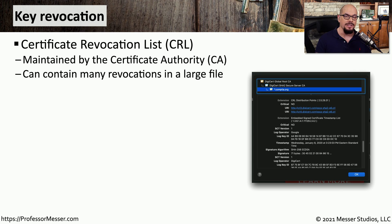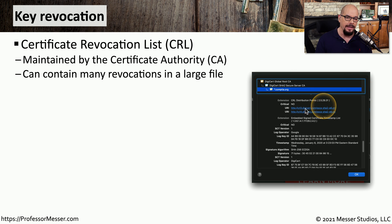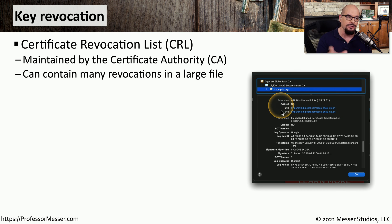There may be times when a site is compromised and the certificates on that site need to be revoked before they expire. We can provide this key revocation through a number of different means. One of these is a certificate revocation list, or CRL. This is a large list of revoked certificates that is stored at the certificate authority — usually a single large file stored on the CA. Looking at the certificate on the CompTIA website, the CRLs are listed as one of the attributes in their certificate. One of these files downloaded before this video was about 18 megabytes in size.